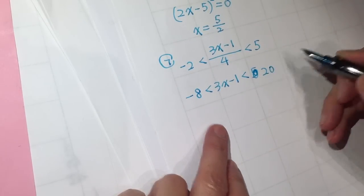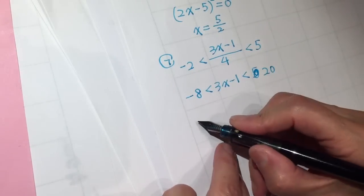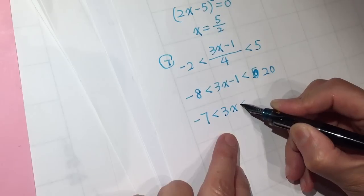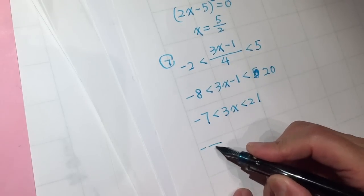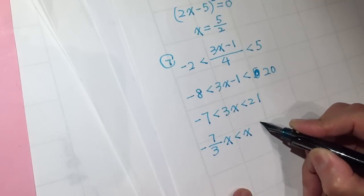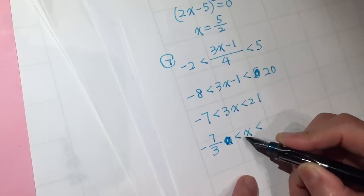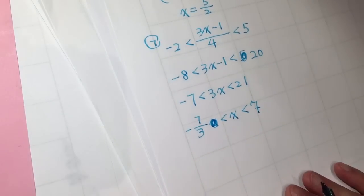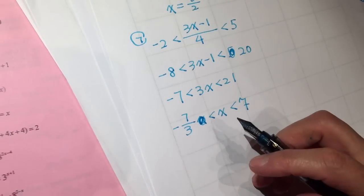I almost made a mistake — it should be negative 7. Shall we actually show number 7? Not in a rush. Number 8.